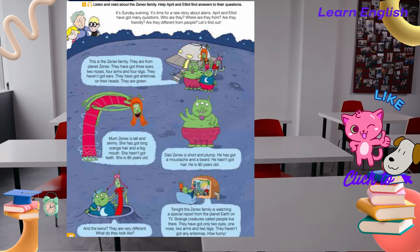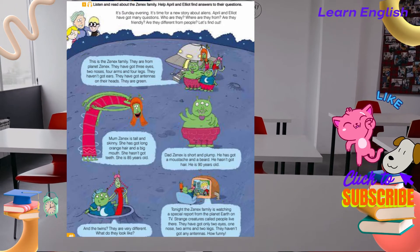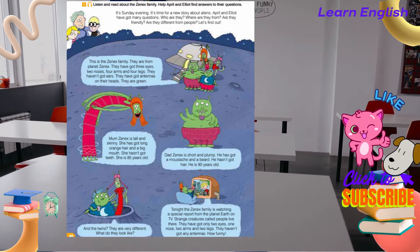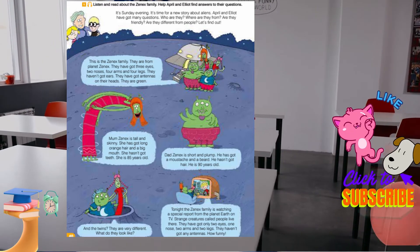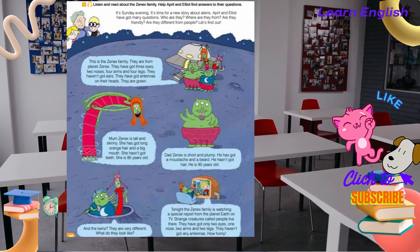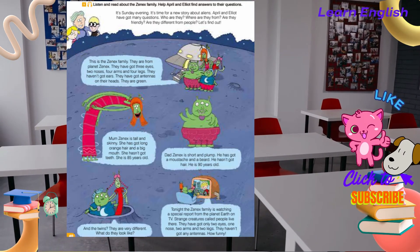Tonight the Xenex family is watching a special report from the planet Earth on TV. Strange creatures called people live there. They have got only two eyes, one nose, two arms and two legs. They haven't got any antennas. How funny they are!